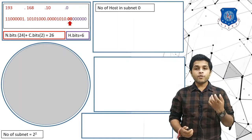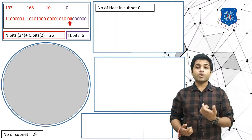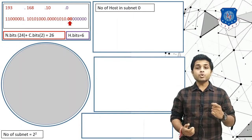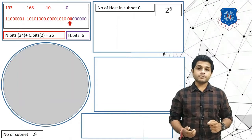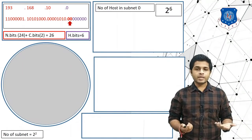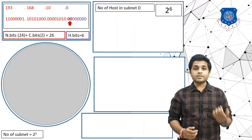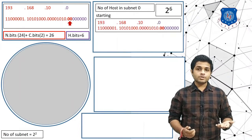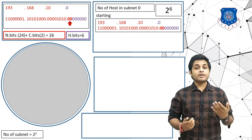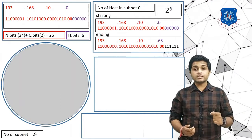To find the number of hosts in Subnet 0, check the size of the host bits. The host bits are 6, so there will be 2 raised to 6 hosts in Subnet 0. To find the first IP address in Subnet 0, we set all host bits to 0, giving us 193.168.10.0. To find the last IP address, we set all host bits to 1, giving us 193.168.10.63.